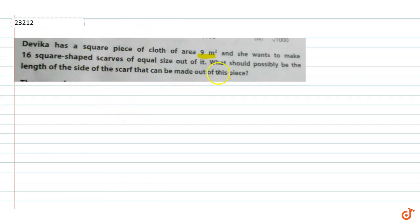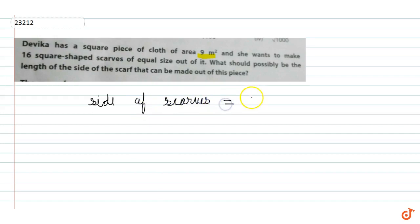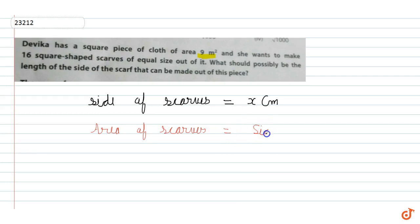We have given that we have 16 square shaped scarves of equal size, so all the areas are the same. Let's say the side of the scarf is equal to x. Area of the scarf is equal to side squared, so it is equal to x square.